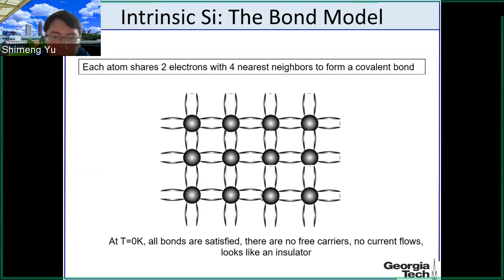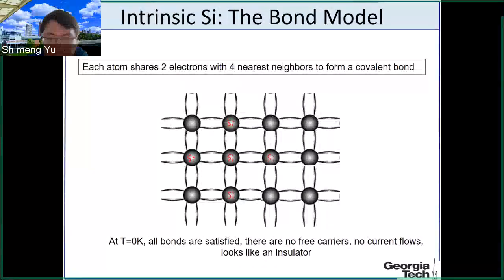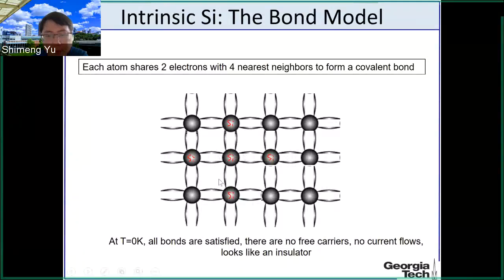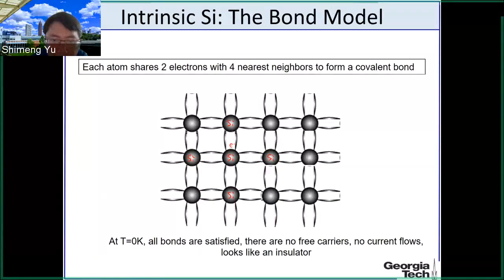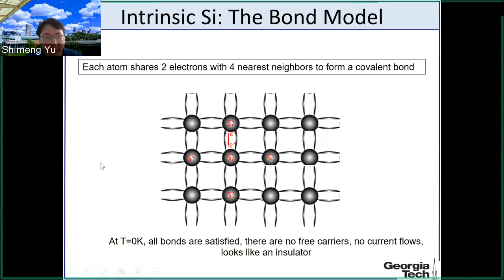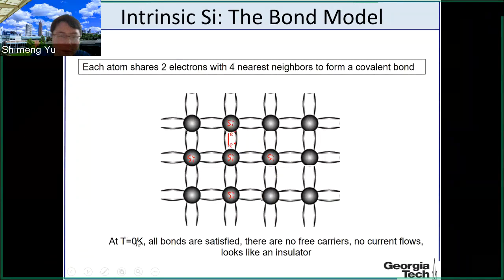Here we have the silicon atoms. As discussed before, each silicon atom is bonded with four neighboring atoms, and there are four covalent bonds formed between those atoms. Each silicon contributes one electron to share with its neighbors. At absolute zero Kelvin temperature — a cryogenic temperature — which is negative 273 degrees Celsius.